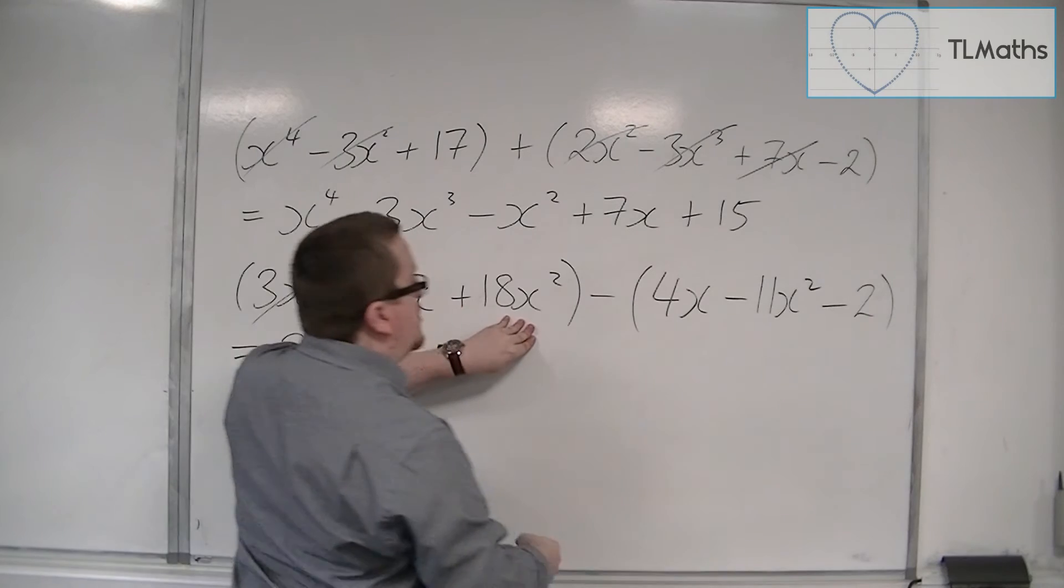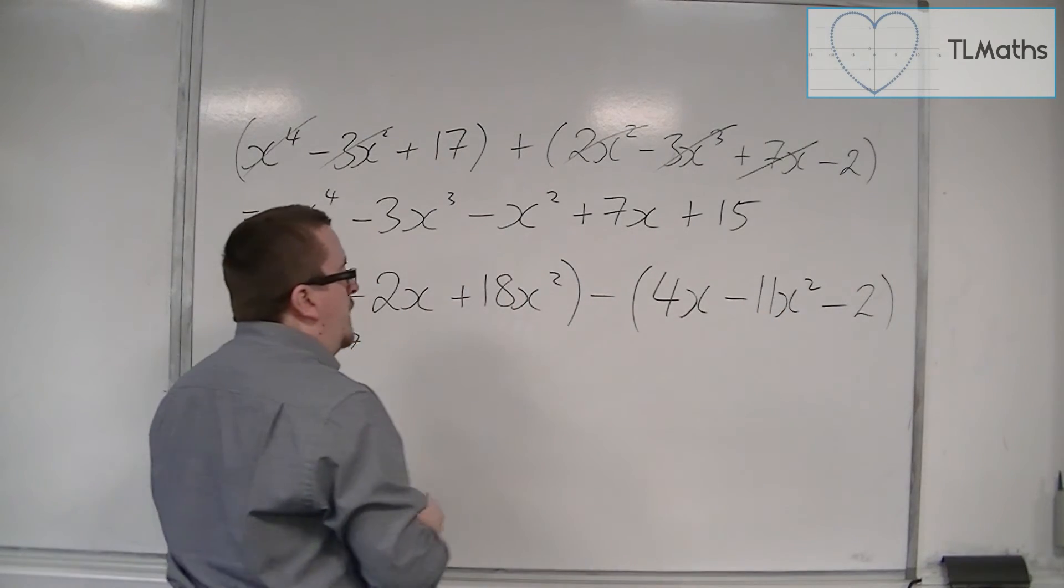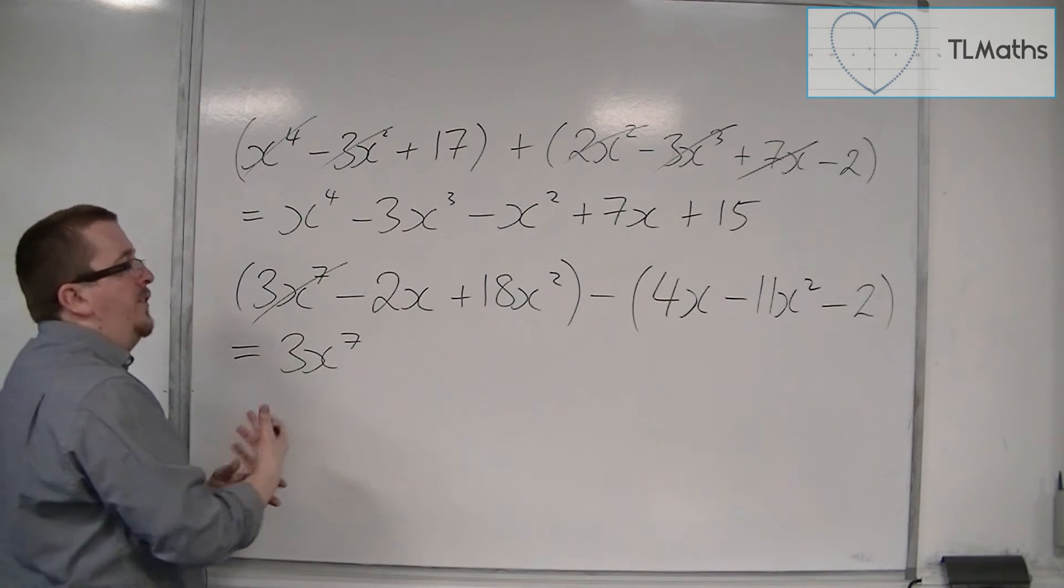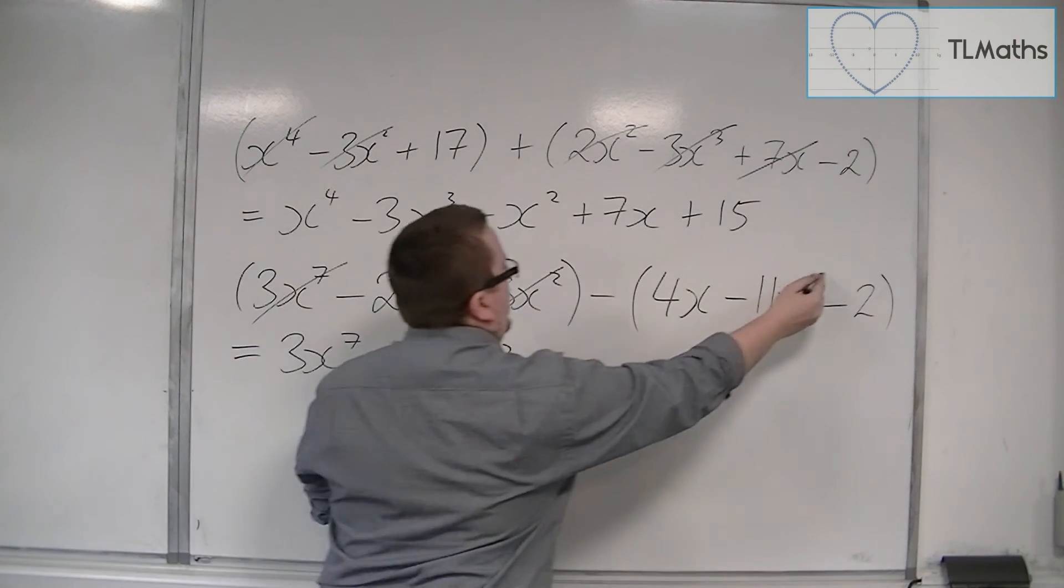We've got 2 of those. We've got 18x squared. Take away minus 11x squared. So that would be 18x squared plus 11x squared. So that's 29x squared. So they can go.